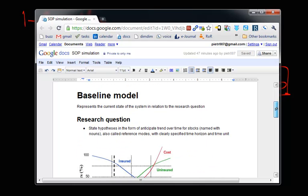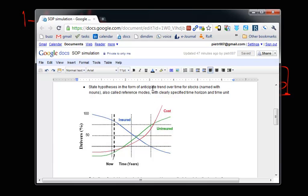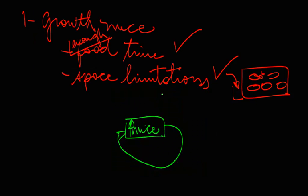So then, what the next step of the protocol says, is that you should put together a baseline model. And you should represent your research question in terms of what's called anticipated trend over time for the stocks, also called reference mode. We're fixing this as we go. So, exactly what does that mean? Well, basically, it means the following.